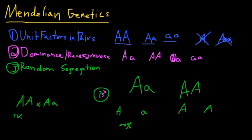So 100% chance that it'll get a capital A from this parent. This parent has a 50% chance of giving a capital A, and a 50% chance of giving a lowercase a.